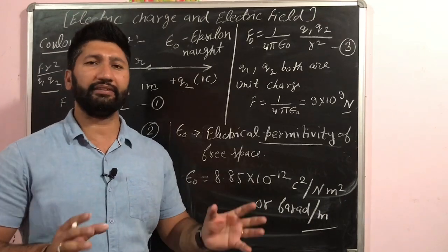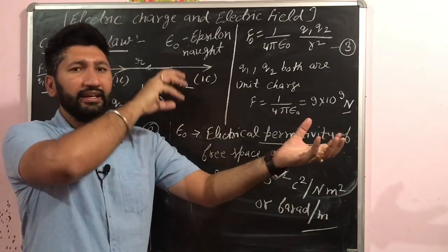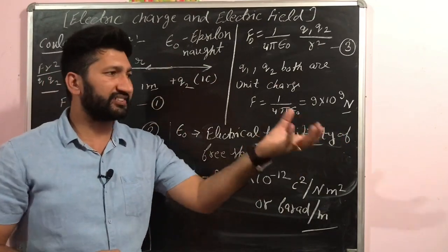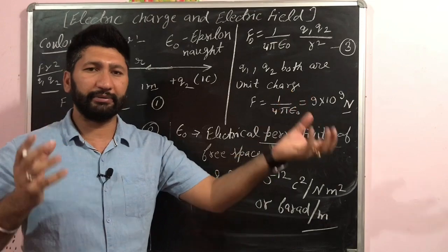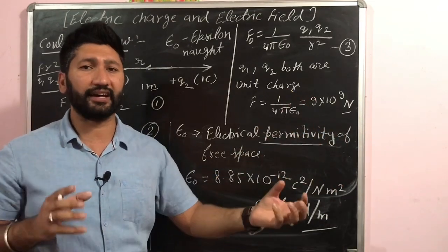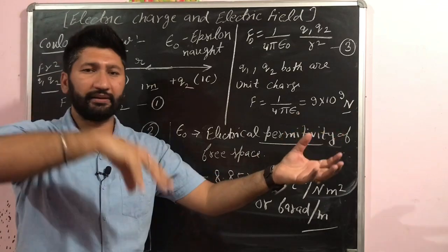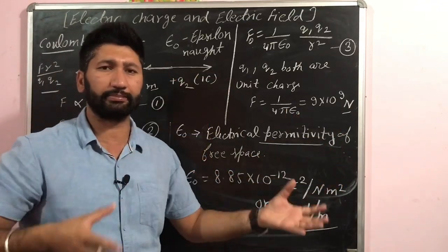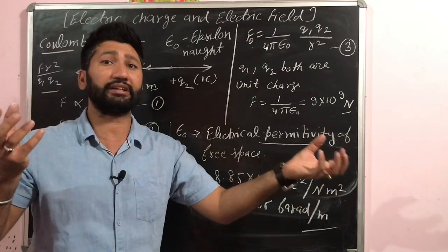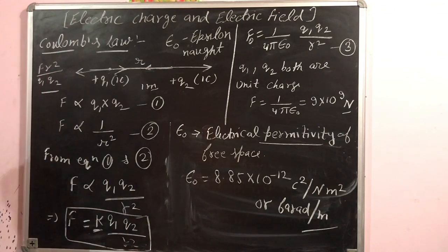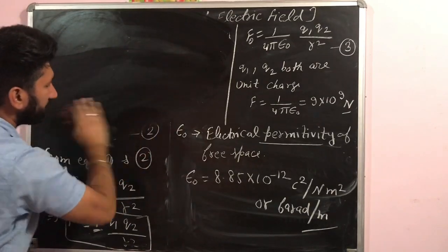Permittivity is a property of the medium which decides the force between two charges. The permittivity will be different for different media, and it determines the force between the two charges placed in that medium.